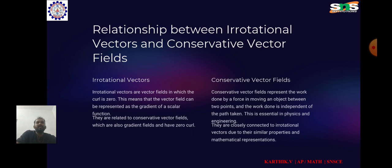Relationship between irrotational vectors and conservative vector fields. Mathematical connection: An irrotational vector satisfies del cross f equal to 0. A conservative vector field is one that can be expressed as the gradient of a scalar function known as the scalar potential. Mathematically, for a vector field f, this is expressed as f equal to del phi. Both irrotational vectors and conservative vector fields are characterized by the existence of a scalar potential.